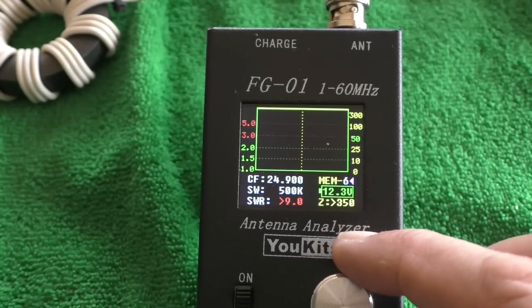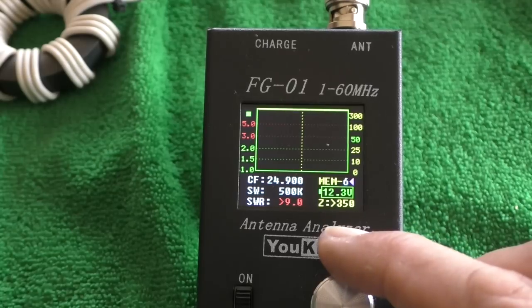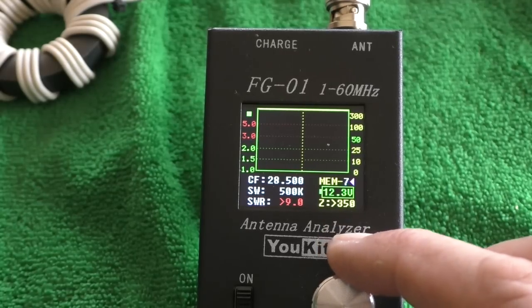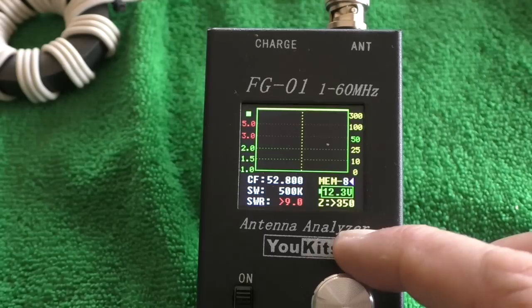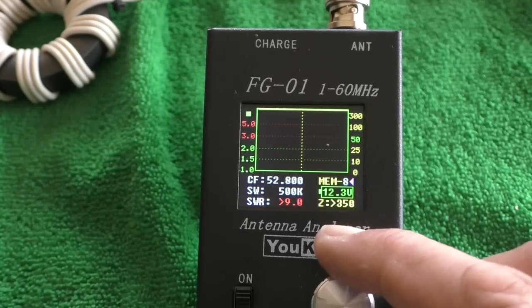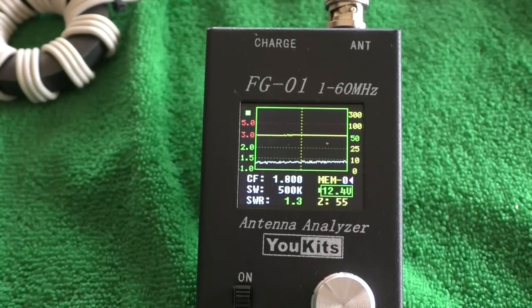24 megs, again, greater than 9 SWR, greater than 9 to 1. Impedance is greater than 350 ohms. 28 megs, again. And 52 megs, as you probably expect, absolute rubbish. So there we go.